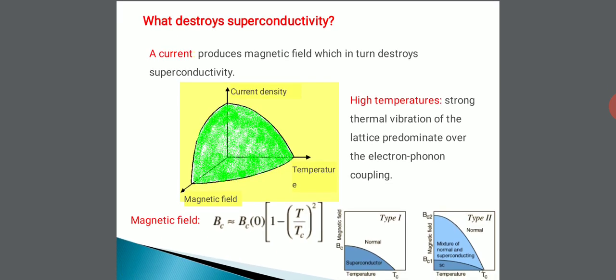Now what destroys superconductivity? There are three parameters: current, temperature, and magnetic field. A current produces magnetic field which in turn destroys the superconductivity. And even magnetic fields, if you apply a certain magnetic field beyond that magnetic field, it will lose its superconductivity phenomena.